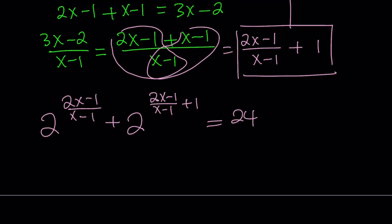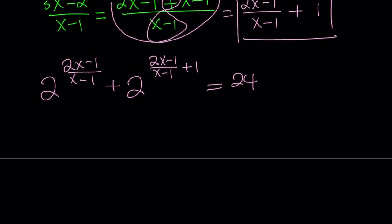Now, notice that we have the 2x minus 1 over x minus 1 twice. But let's go ahead and use the rules of exponents. The exponents are being added, which means we can turn this into a multiplication problem. So we can write this as 2 to the power of 2x minus 1 over x minus 1 plus 2 to the power of 2x minus 1 over x minus 1 times 2 to the power of 1, which can be written as 2, obviously. And that equals 24.